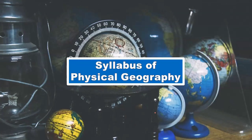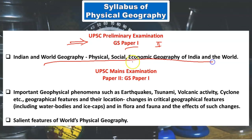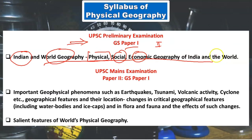Now, what is the syllabus of physical geography? If we talk about the preliminary examination, there will be two papers — Paper 1 and Paper 2, both MCQ types. In GS Paper 1, questions will be asked from Indian and world geography, which will cover the physical aspect, social aspect, and economic aspect of India and the world. Social and economic aspects are part of human geography, which we will study later. So physical geography is an important part of the prelim syllabus.